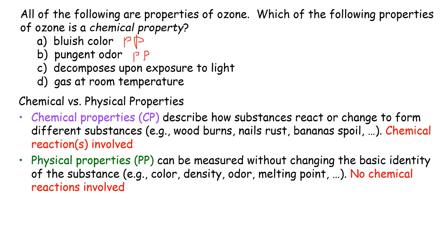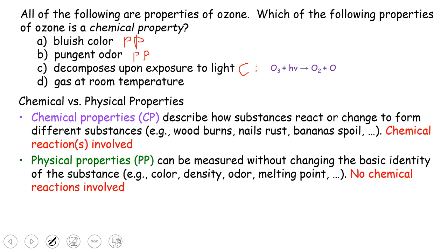Now, ozone decomposes upon exposure to light. If we write this in chemistry language: ozone is exposed to light — and light is energy — then a chemical reaction is going on. Ozone (O3) decomposes or degrades into an oxygen molecule and an oxygen atom. There is a chemical reaction right here, so therefore this is a chemical property.